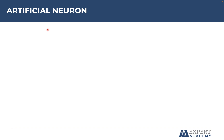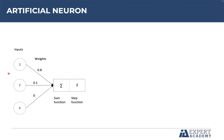Now let's look at the representation of the artificial neuron. We can see the inputs that are data from the environment — for example, there are three inputs: number 1, number 7, and number 5. Don't worry now about what these values represent. We can also see the weights: 0.8, 0.1, and 0. Each input has a corresponding weight. Then we can see the sum function and the step function. Let's perform the calculations step by step.